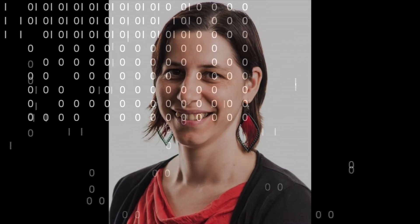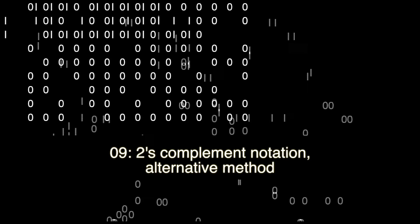In this video, I'm going to show you a different way of using 2's complement notation. Depending on which method makes more sense or is easier for you, you've got the choice. It doesn't matter which method you use. To recap, 2's complement notation is one way to represent negative numbers in the binary number system.